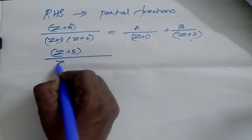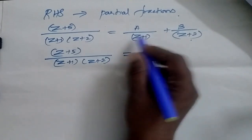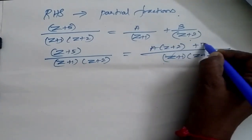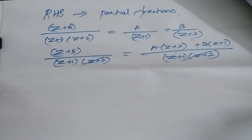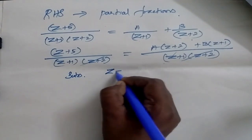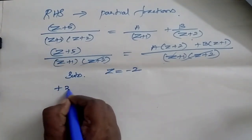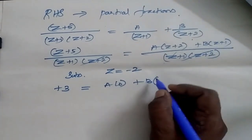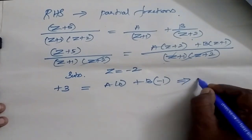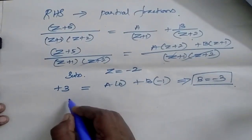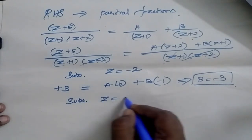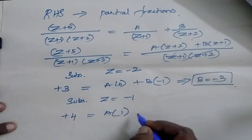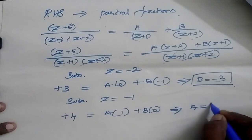Then (z+5) divided by (z+1)(z+2) is equal to, taking LCM (z+1)(z+2), A(z+2) plus B(z+1). Now I can cancel the denominators. Substitute z = -2: -2+5 is +3, equal to A(0) plus B(-2+1) = B(-1). So this implies B = -3. Now substitute z = -1: -1+5 is +4, equal to A(-1+2) = A(1). So A = 4.